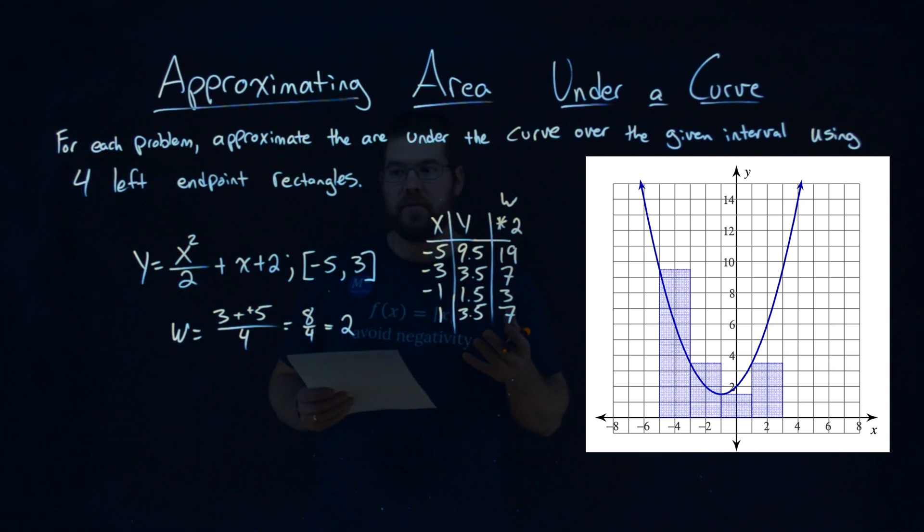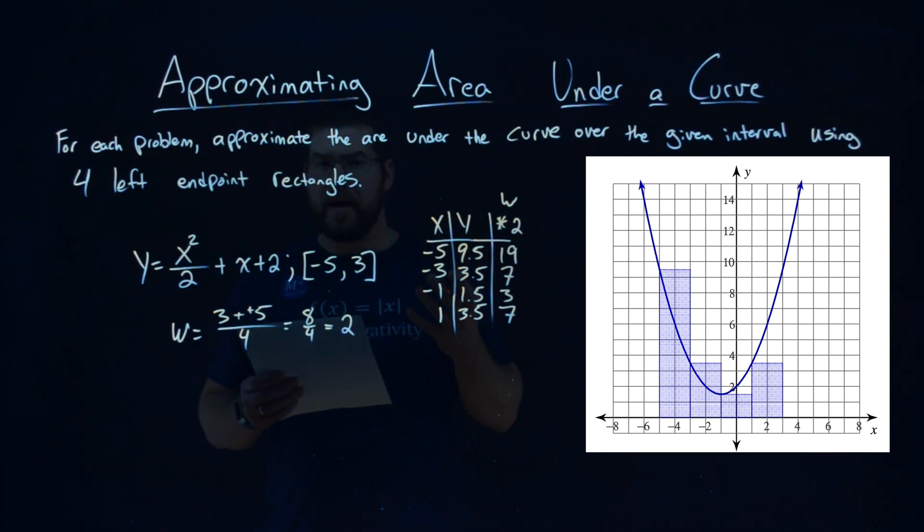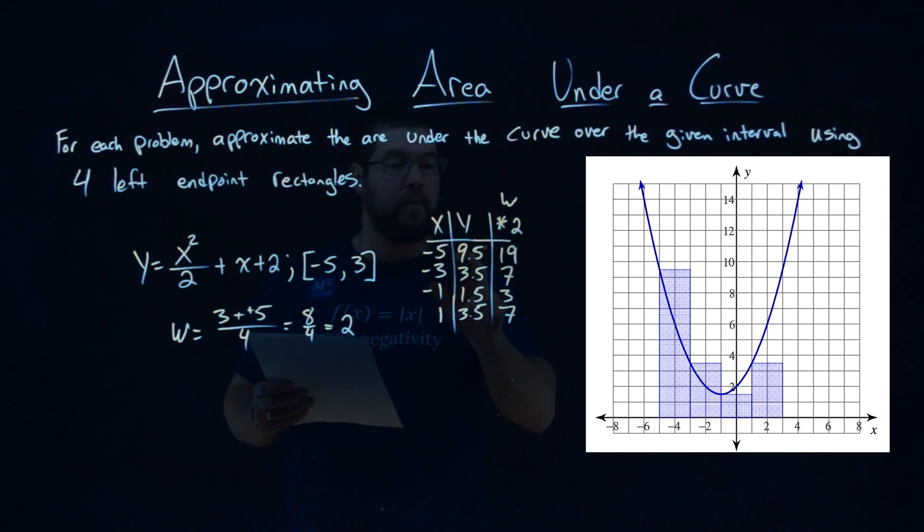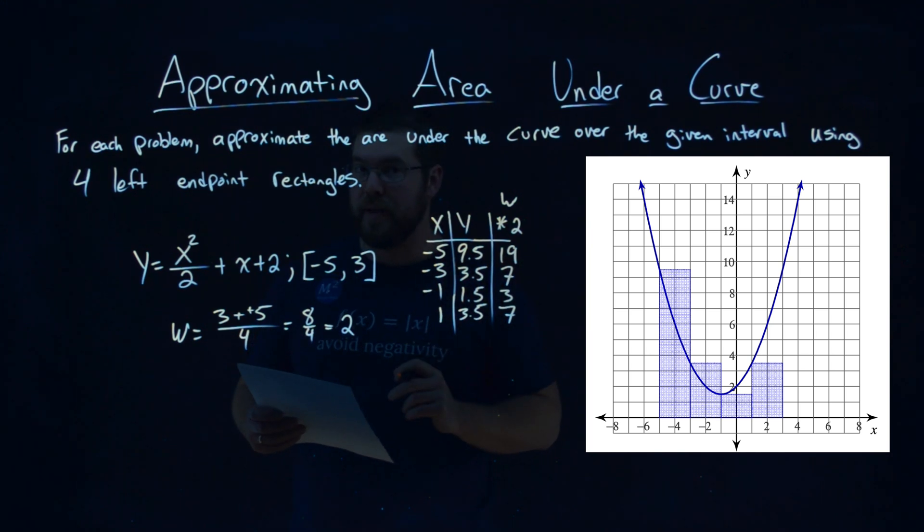And that really gives us the area of each rectangle—length times height. And so we can see that with our graphs here. You can see each one of those rectangles has that width. The first one has a height of 9.5 and a width of 2, a total area of 19.